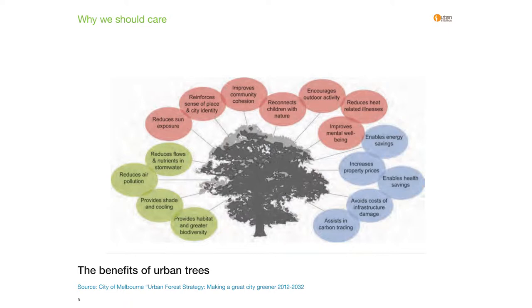In a study of 982 trees, trees have the capacity to remove a huge amount of pollution at a significant dollar benefit. They can also store carbon at a significant dollar benefit and save on energy costs through shading buildings in summer and providing solar access in winter. Some of the other really important reasons we want trees in landscapes is to reconnect our children with nature, improving mental well-being, and creating a sense of place and a city identity.